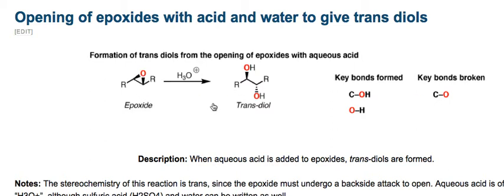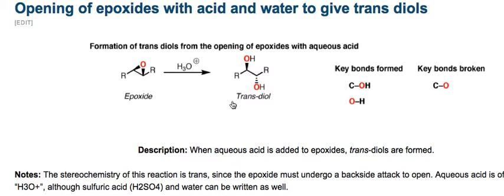And we're calling this a trans diol, because if you examine the stereochemistry of this epoxide, we're starting off with carbon-oxygen bonds which are both wedges. Notice that one of the carbon-oxygen bonds has remained a wedge, and the other one has become a dash, so it's inverted. And this is due to the fact that the epoxide undergoes a backside attack in order to open, and this backside attack leads to an inversion of configuration.